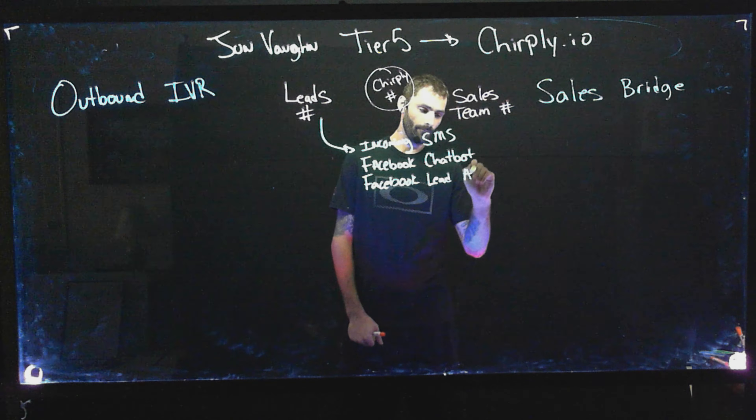In the outbound IVR, Chirply is first going to dial your lead. Your lead gets the incoming phone call and goes through an options menu — it can be a very easy options menu. It could literally just say 'Thank you for your interest, press one to talk to a realtor.' They press one and Chirply connects with your sales team. Or you can go through a more elaborate pre-qualification process. Once they get pre-qualified, they're connected with your sales team.